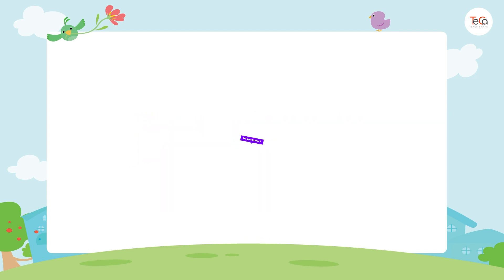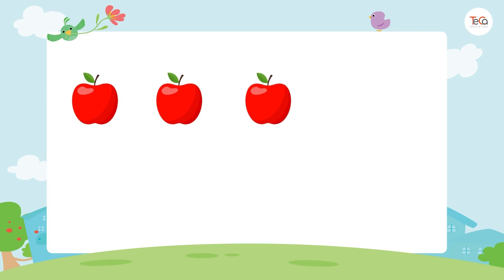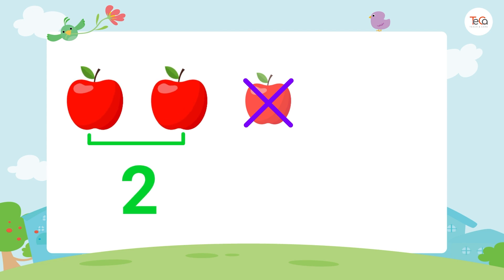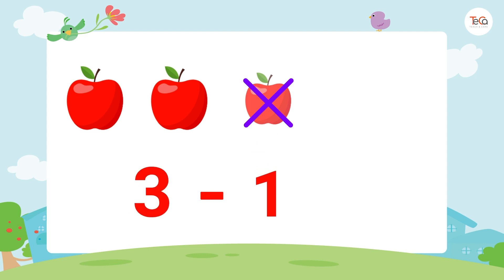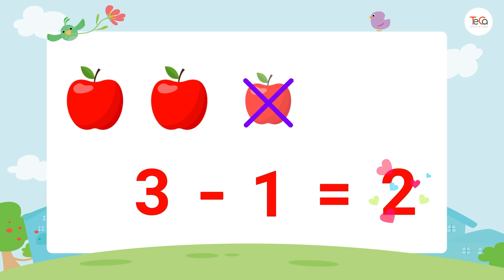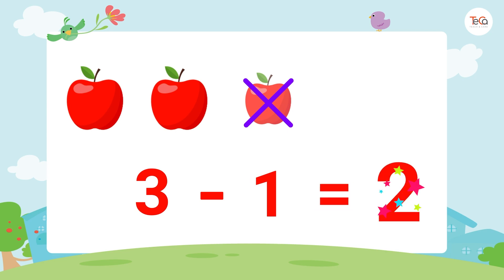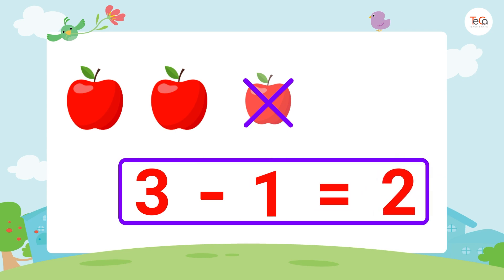For example, you have three apples. They look very delicious, so you eat one apple. Now you have two apples left. Here we subtract one from three to get two. We say three minus one equals two. We call this subtraction.